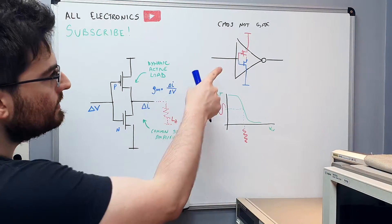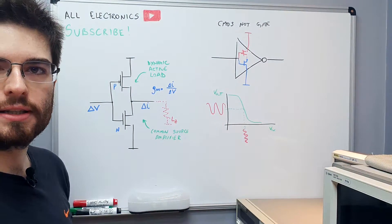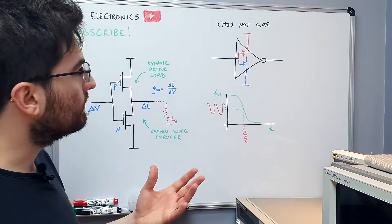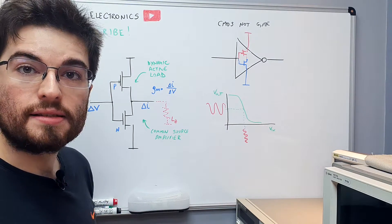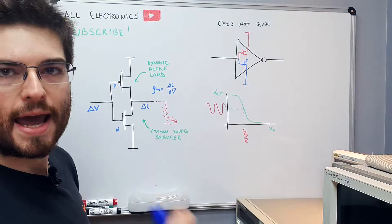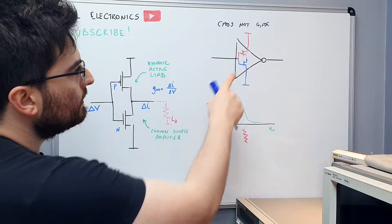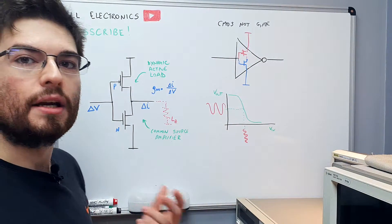So guys, this is a CMOS inverter gate and we can see that inside the CMOS NOT gate we have two complementary CMOS devices, one N device and one P device, and they are connected in a complementary way.